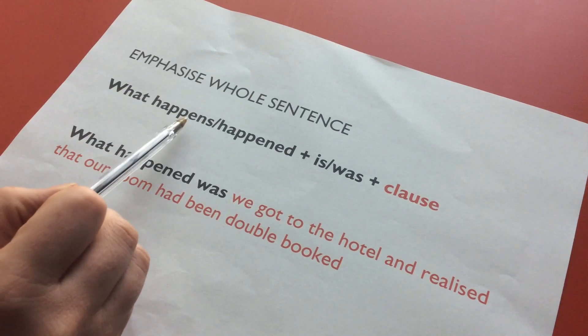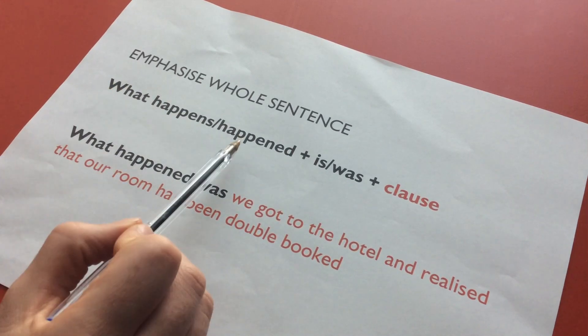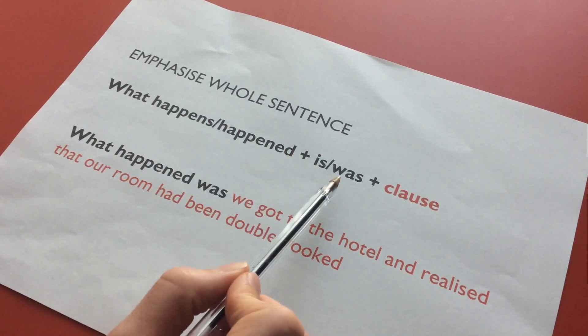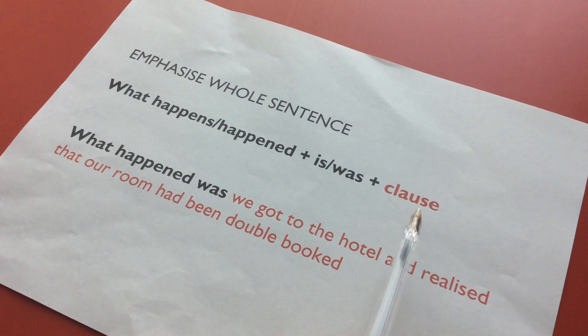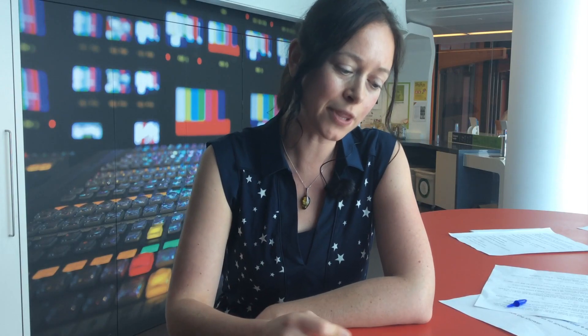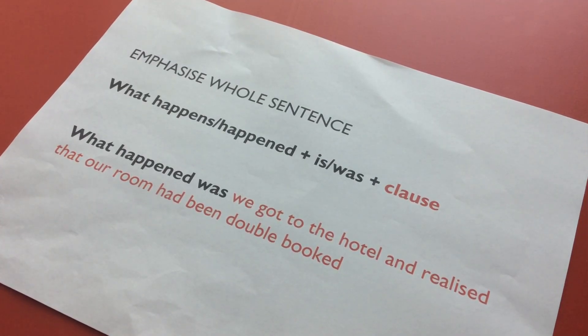Finally, to emphasise the whole sentence, we can use this structure: 'what happens' or 'what happened', followed by 'is' or 'was', and the clause that we want to emphasise. For example, I started my story with 'what happened was we got to the hotel and realised that our room had been double booked'.